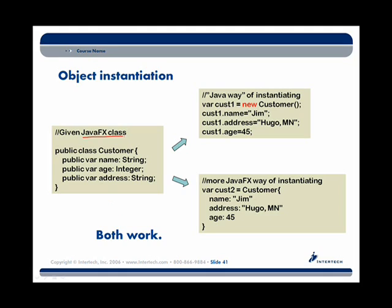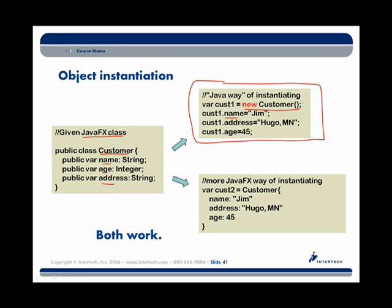Let's take a look at a simple JavaFX class — in this case, a Customer class with instance variables of name, age, and address. The Java way of using that class would look something like this: create a new Customer, then with that customer object reference call things like .name to set its name, address, and age properties — the imperative programming way. The JavaFX way of instantiating a customer object is to simply call on Customer and provide values for each of the instance variables inside of the expression code block. Both work, but the declarative JavaFX way is preferred over the imperative Java approach.